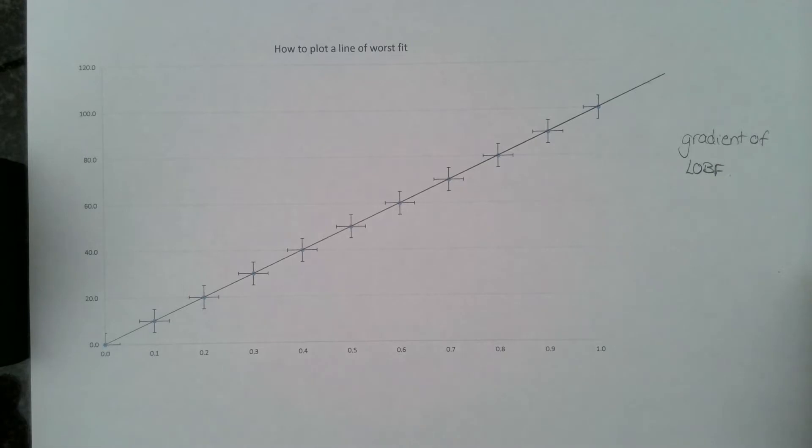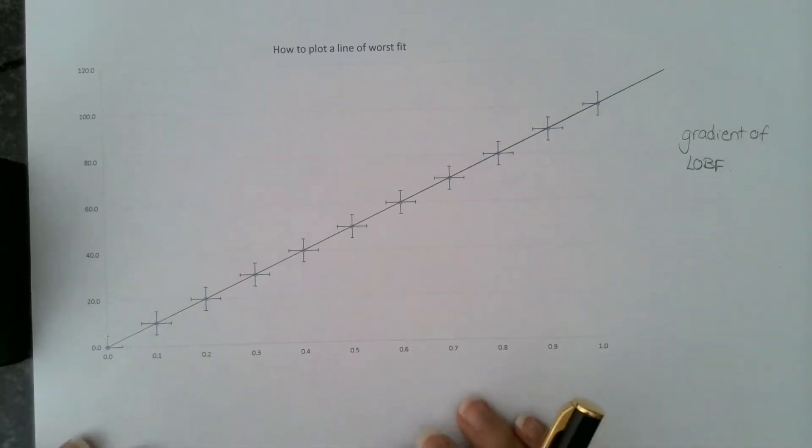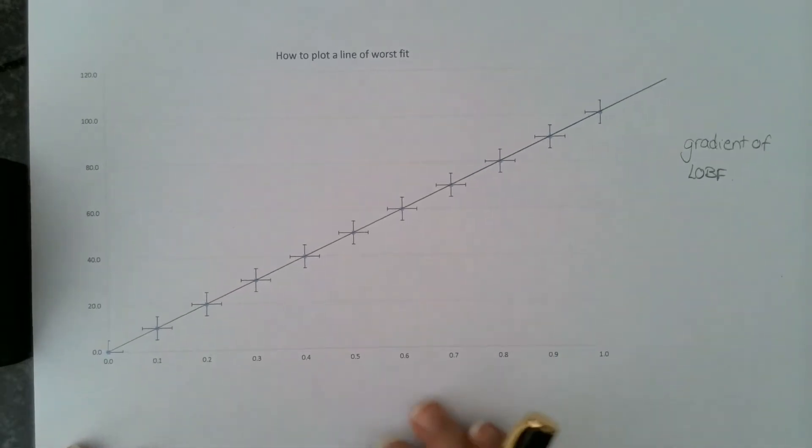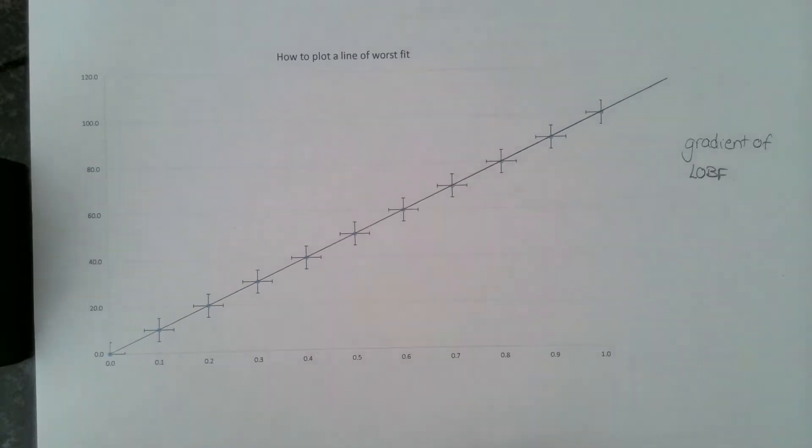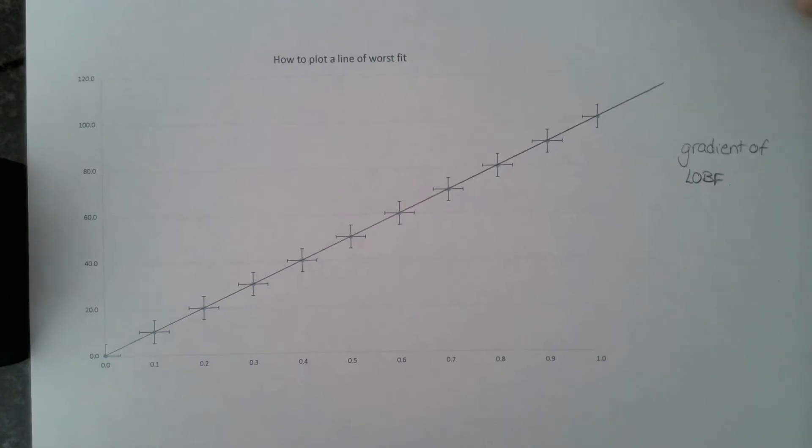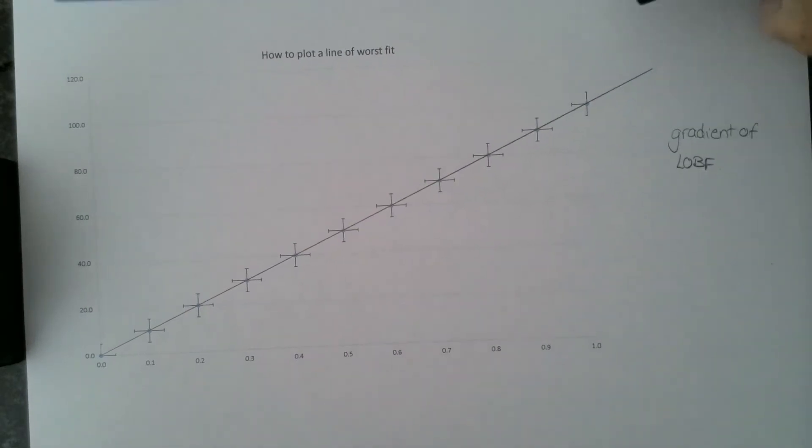I think you're all familiar when you plot your graph. I haven't put any units or labels on my axes because this is a completely fictitious graph. Its purpose is only to show you how to plot this line of worst fit.